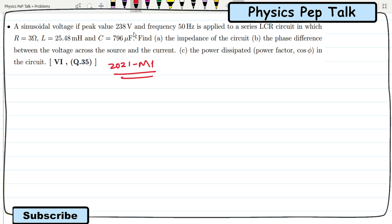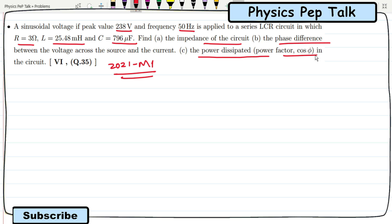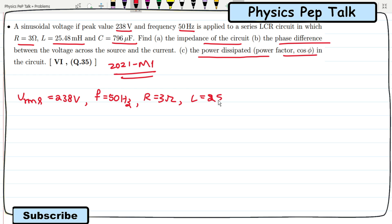Next problem from 2021 Model Paper 1: a sinusoidal voltage of peak value 238 volts and frequency 50 hertz is applied to a series LCR circuit in which R is 3 ohms, L is 25.48 millihenry, and C is 796 microfarad. Part A: the impedance of the circuit. Part B: phase difference between voltage and current. Part C: power factor cos phi. The frequency is 50 hertz, R is 3 ohms, L is 25.48 millihenry, and C is 796 microfarad.